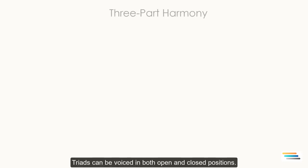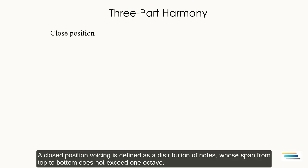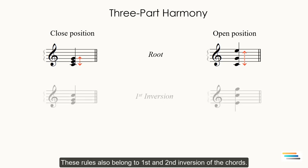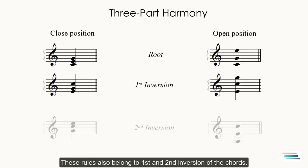Triads can be voiced in both open and closed positions. A closed position voicing is defined as a distribution of notes whose span from top to bottom doesn't exceed one octave. Open positions of triads have a distribution of notes whose span from top to bottom exceeds one octave. These rules also belong to first and second inversion of the chords.